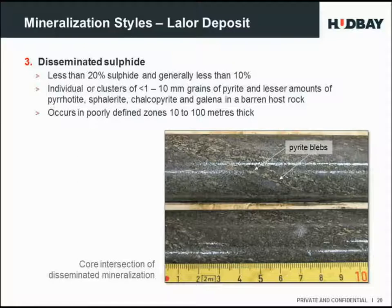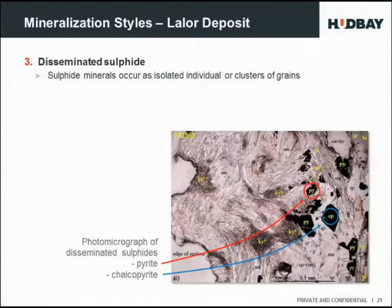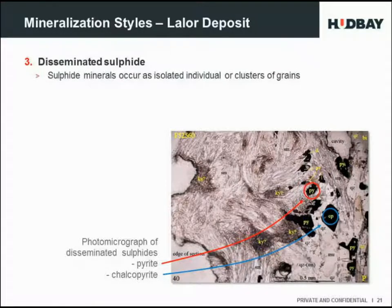The third mineralisation type is disseminated sulphides. Drill core shows pyrite occurring in individual grains less than a millimetre to ten millimetres across, predominantly pyrite, also pyrrhotite, sphalerite, chalcopyrite and galena, in a barren host rock. These occur in poorly defined zones ten to one hundred metres thick. In the photomicrograph, the black minerals are sulphide sitting in a silicate-rich matrix — isolated pyrite and chalcopyrite crystals about 0.1 to 0.2 millimetres across.